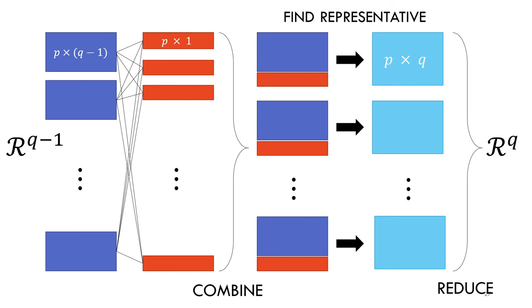We then apply the algorithm to find the affine-equivalent representative to each of those functions. Finally, when we eliminate duplicates, we obtain the list of p-by-q affine-equivalent representatives, and this list is exhaustive.